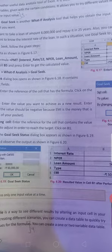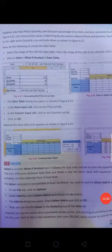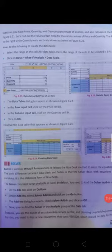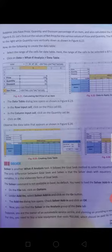Instead of creating different scenarios you can create a data table to quickly try out different values for the formulas. We can create one or two variable data tables. In this we can change our ratio and we can get our output.